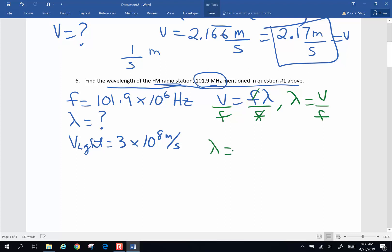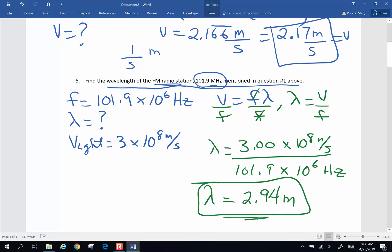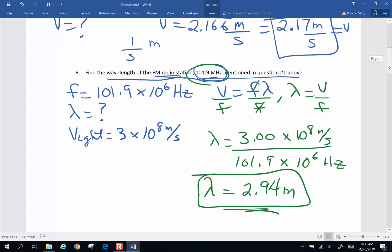So wavelength will be 3.00, keeping it to those 3 sig figs, to the 8th meters per second, divided by 101.9 times 10 to the 6th hertz. And when I plug those numbers into my calculator, I end up with 2.94 meters. And that is a logical number for a FM radio wave.